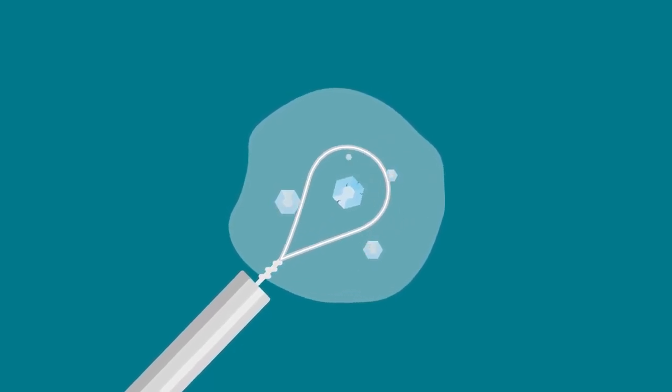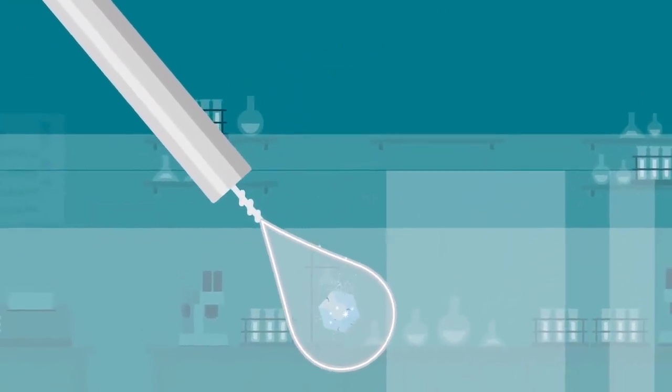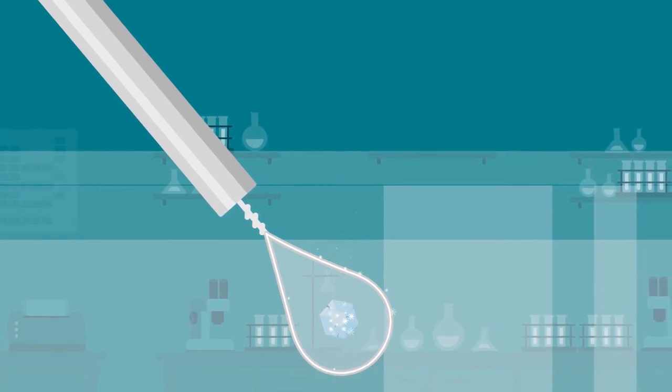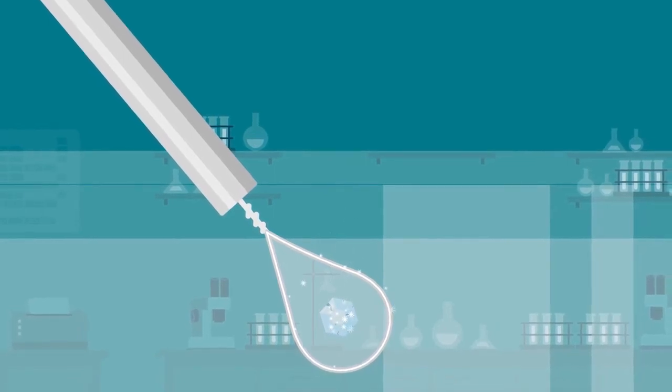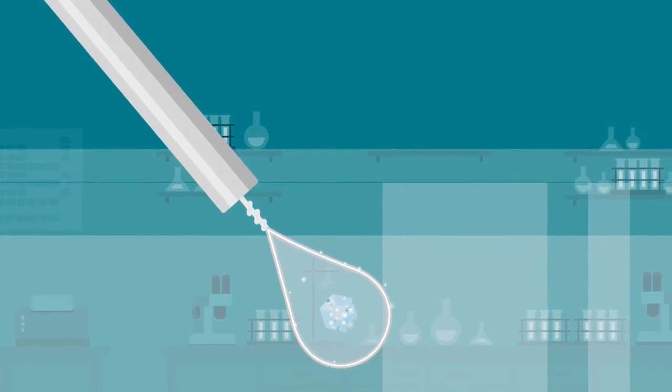Second, extra fluid left surrounding the crystal often degrades the cryocooling process, slowing the crystal's cooling rate and allowing more time for the growth of crystalline ice on and within the delicate crystal. Ice formation damages crystals and lowers the quality of their diffraction.